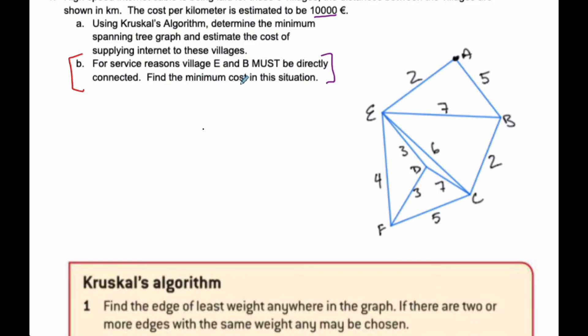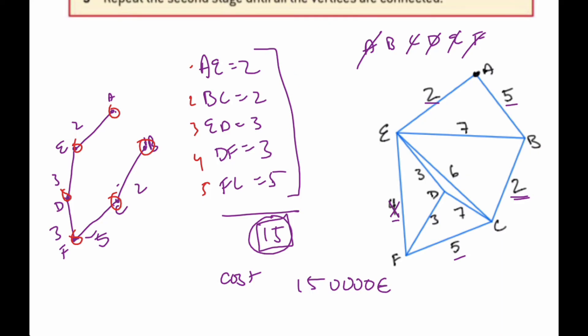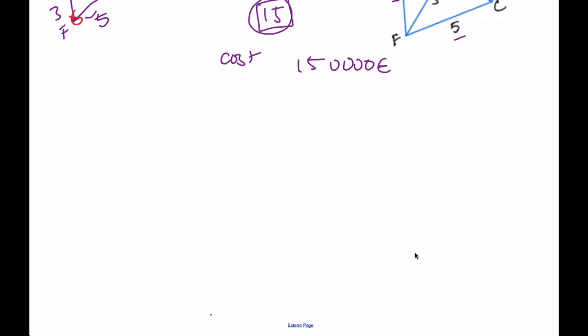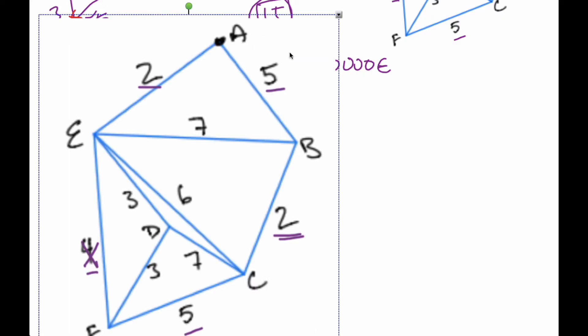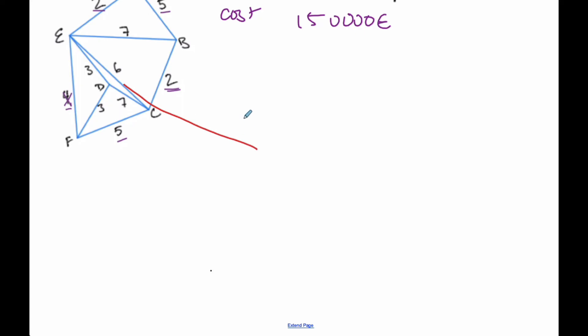And so now, part B says, for service reasons, E and B must be directly connected. Well, that means I'm going to have to do a different approach for this. I'm going to have to adapt what I have in a different way. And so let's try this again.